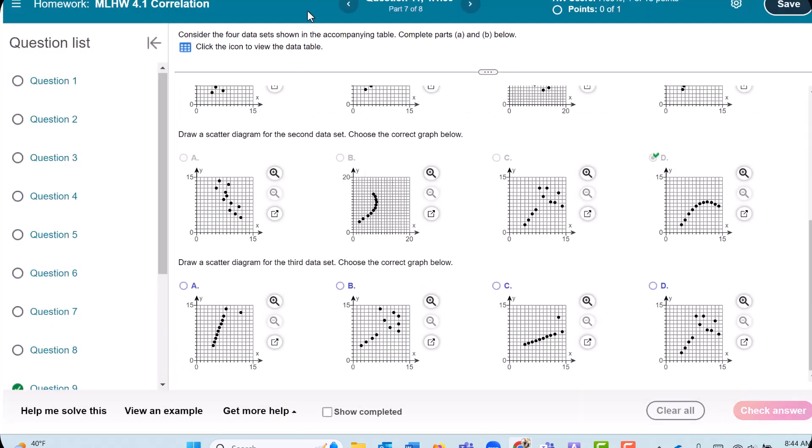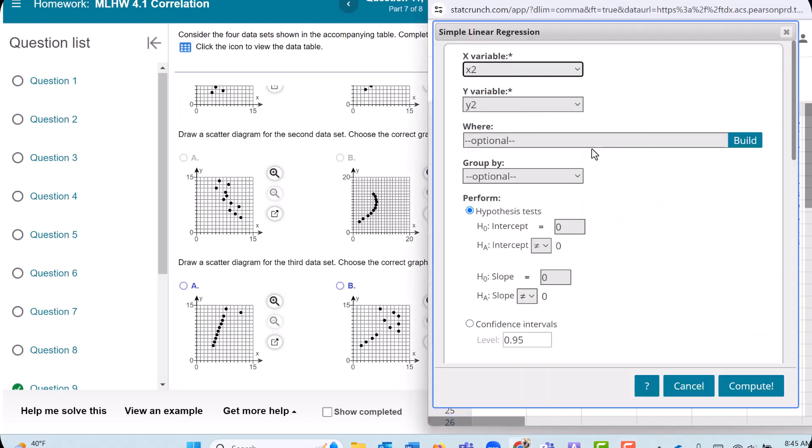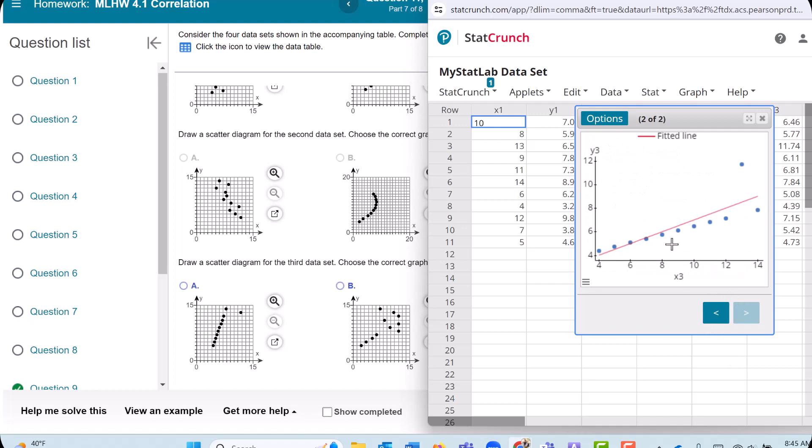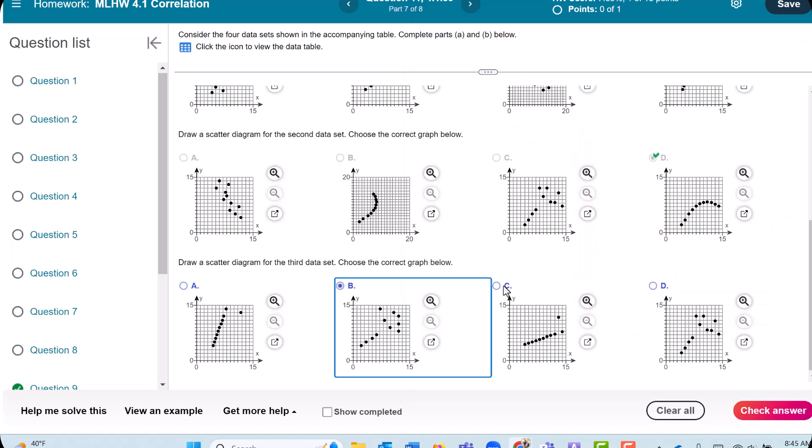Now let's do the third dataset. I'm going to go to Options and Edit, X3 and Y3. Press Compute. Look over Next. Looks pretty straight except for this outlier right here. So which one looks like that? This guy right here, C.